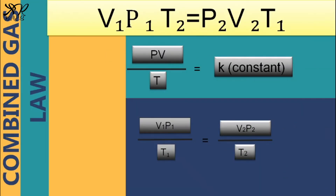When combined, the three gas laws can be expressed as P times V all over T, when the number of moles is constant. By comparing the same substance under two different sets of conditions: P₁ times V₁ all over T₁ is equal to P₂ times V₂ all over T₂.